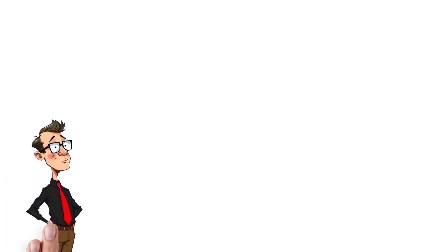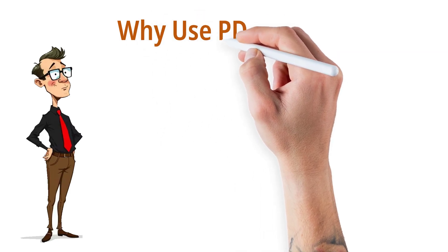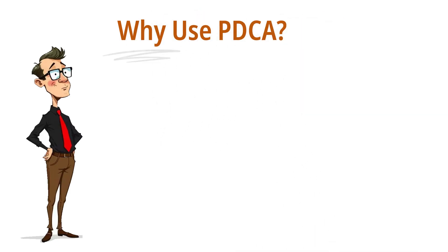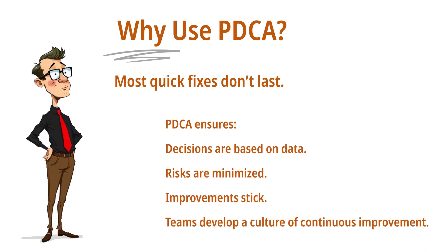Why use PDCA? Why not just fix the problem and move on? Because most quick fixes don't last. PDCA ensures decisions are based on data, not guesses. Risks are minimized by testing on a small scale. Improvements stick because they're checked before standardizing. And teams develop a culture of continuous improvement.